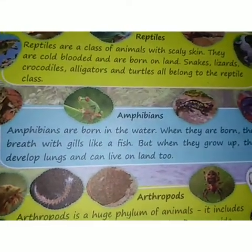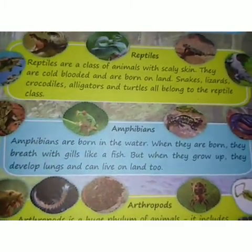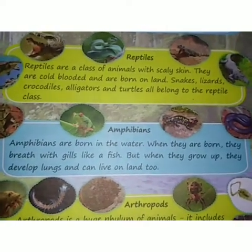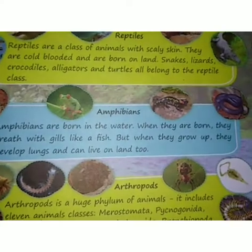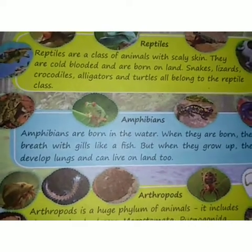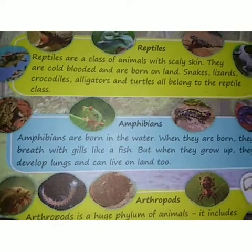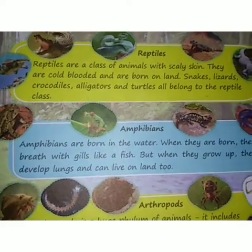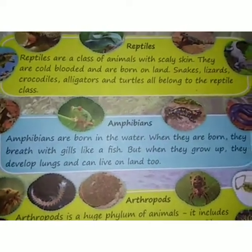Next is amphibians. Amphibians are born in water. They breathe with gills like a fish, but when they grow they develop lungs and can live on land too. Amphibians are born in the water and until they become adults they live in the water and breathe using their gills. When they become adults, they develop lungs and can live on land too.